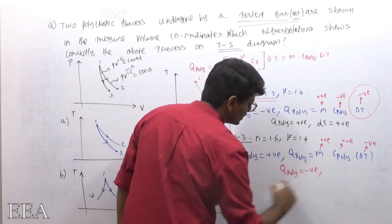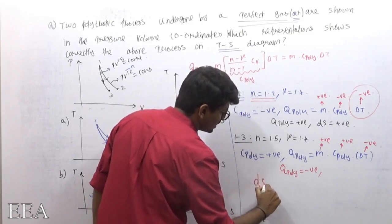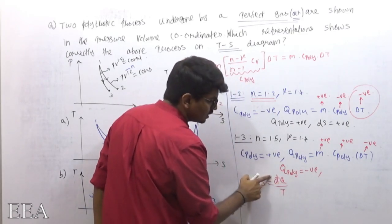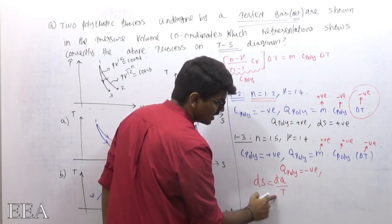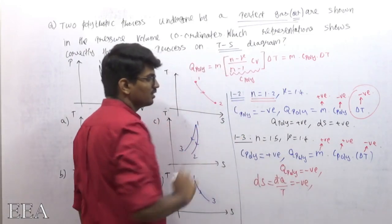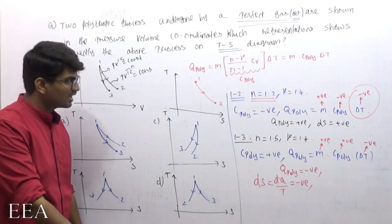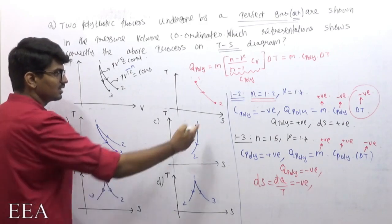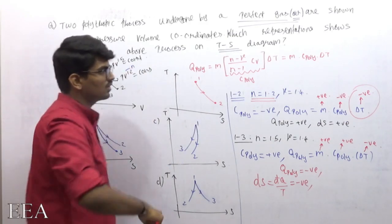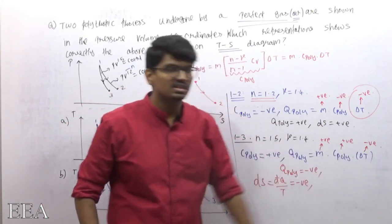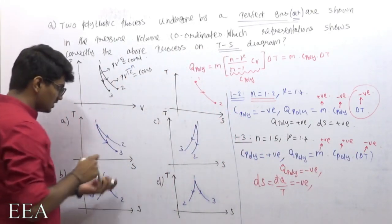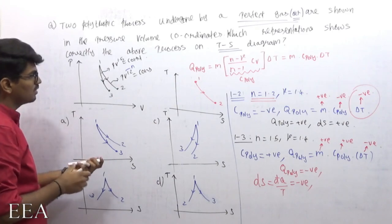Since c_poly is positive and ΔT is negative, q_poly becomes negative. Change in entropy = δQ / T — heat transfer is negative and temperature is positive, so change in entropy is negative, meaning entropy decreases. Temperature is also decreasing. Both temperature and entropy are decreasing for process 1 to 3.